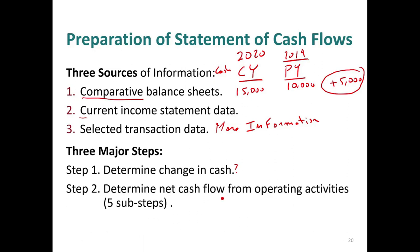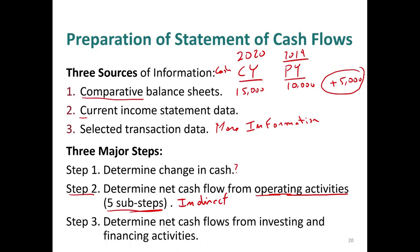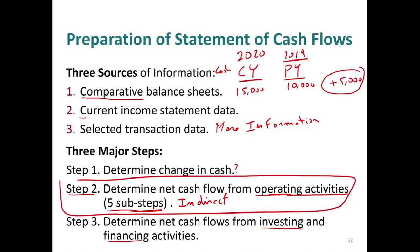Step two: determine the net cash flow from operating activities, starting with the operating activities. For this session I'm using the indirect method; in the next session I'll use the direct method. This step will have five sub-steps, so the majority of this lesson will be about this step. Step three is to determine the net cash flow from investing and financing — we'll focus mainly on step two.